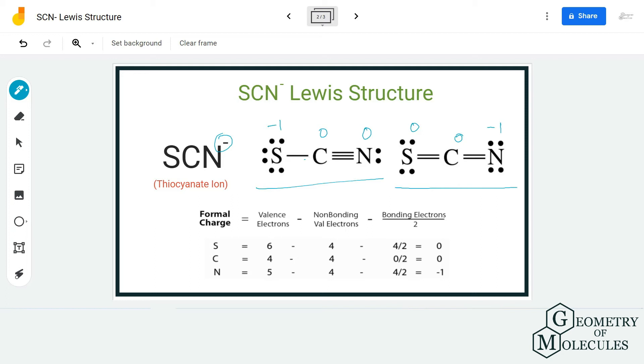When you consider these atoms like sulfur, carbon and nitrogen, carbon is the least electronegative atom, nitrogen is the most electronegative atom. So nitrogen atom can have a negative charge because it is most electronegative. It's preferable to go for this structure over this one because in this structure nitrogen is having a negative charge.